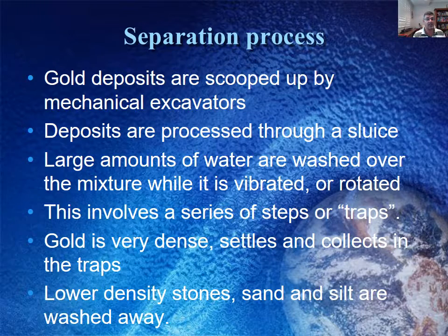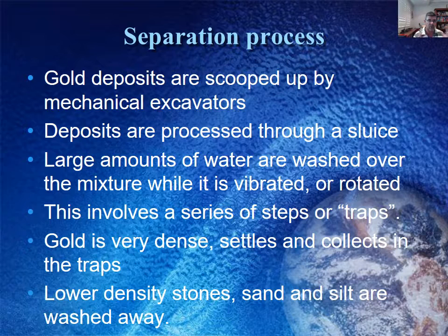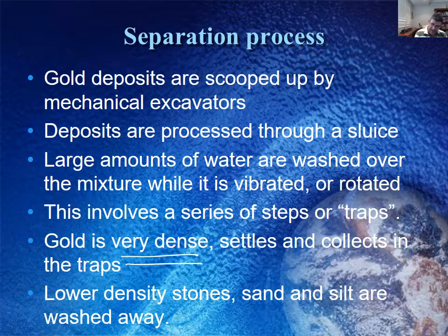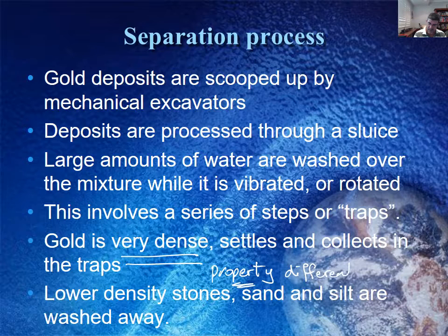The separation process is basically this: on the large scale, large amounts of rock material are collected by mechanical excavators. These are processed through a sluice, which is basically lots of water being washed over the mixture, usually agitated in some way — vibrated or rotated — and then there will be a series of traps. The point of any separation method is that there must be a physical or chemical property which the desired substance has that is different from the other components of the mixture.